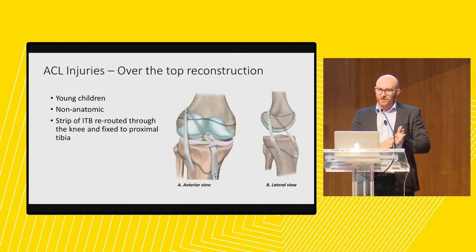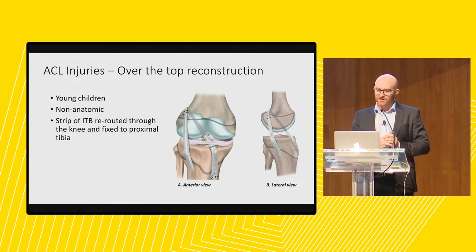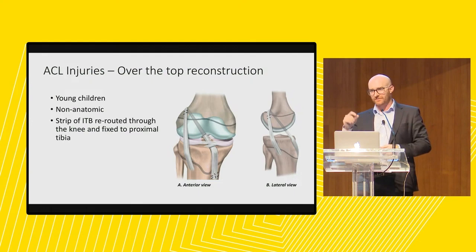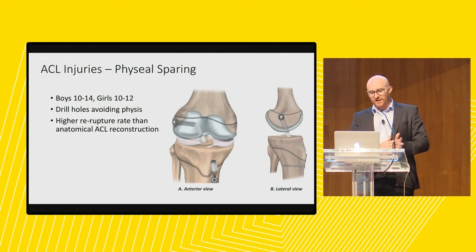In terms of reconstruction options, for young children — generally under 10 years old — we do non-anatomic ACL reconstruction to spare the physis and avoid angular growth deformity. We take a strip of the IT band, leave it attached distally at Gerdy's tubercle, reroute it around the lateral femoral condyle, through the knee under the meniscal ligament, and fix it at the front. This works very well, and re-rupture rates are actually quite low despite not having reconstructed the ACL with a standard graft.